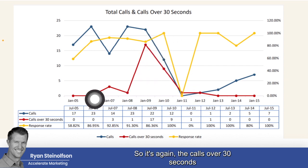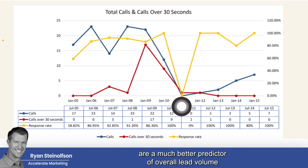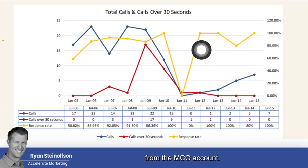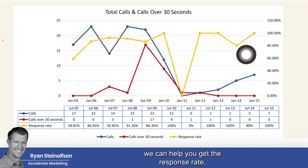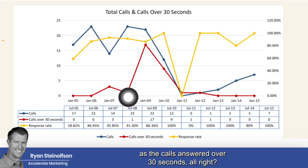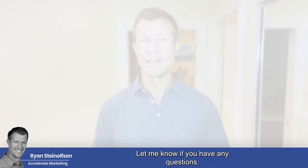Calls over 30 seconds are a much better predictor of overall lead volume than just the response rate percentage that you can get from the MCC account. If you don't have that, we can help you get the response rate, but again, it's not as predictive as calls answered over 30 seconds.